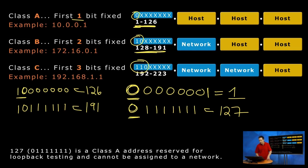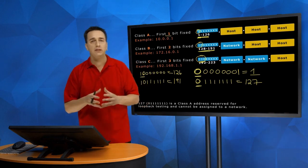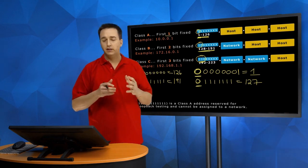And same thing with Class C, except now the first three values are going to be fixed. So the first three values being fixed to one, one, zero, you'll have one, one, zero, zero,